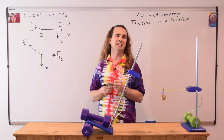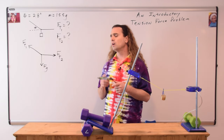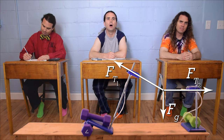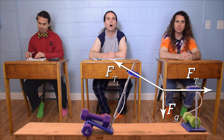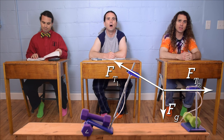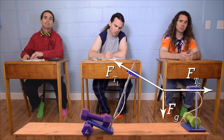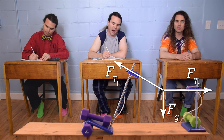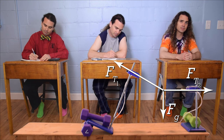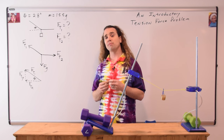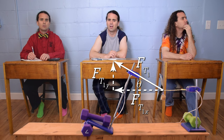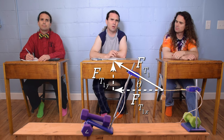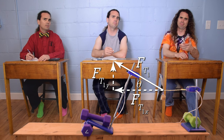Step two — break forces into components. Bo, which force or forces do we need to break into components, and why? The force of gravity is in the y direction, and the force of tension two is in the x direction, so we don't need to break either of those forces into components. The force of tension one is neither directly in the x or y direction, so we need to break the force of tension one into components. But we don't know tension force one, so how can we break it into components?